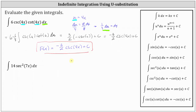We'll let u equal 7x. If u is equal to 7x, the integrand function is now 14 secant squared u, but we still have dx, which is why we need to determine differential u. Differential u is equal to the derivative of 7x with respect to x times dx, which gives us 7 dx. Dividing both sides by 7, we get 1/7 du equals dx.